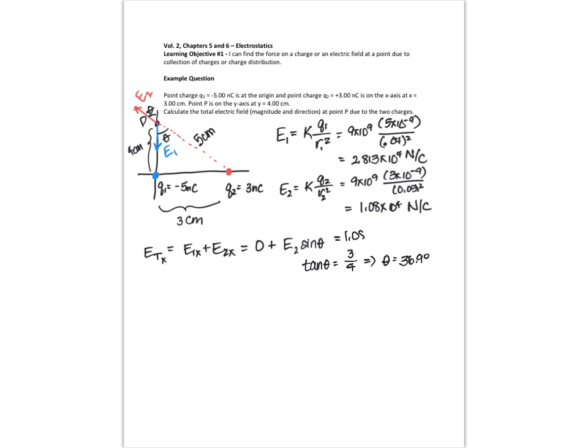So that's just doing a little trig with my triangle. So this ends up to be 1.08 times 10 to the 4 times the sine of 36.9. Something that I neglected to do right here is I should have made this negative, because you can see that E2 tends to point into the negative x direction, so I'll put a negative sign there. So E_tx ends up to be minus 6.48 times 10 to the 3rd newtons per coulomb.